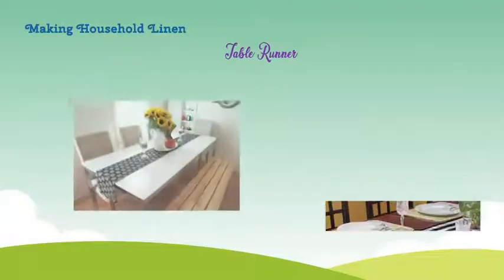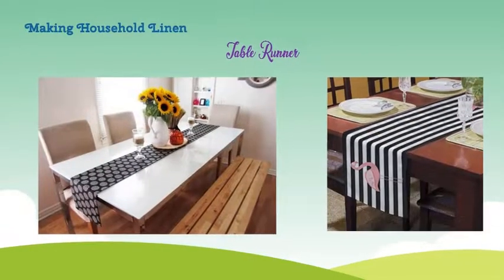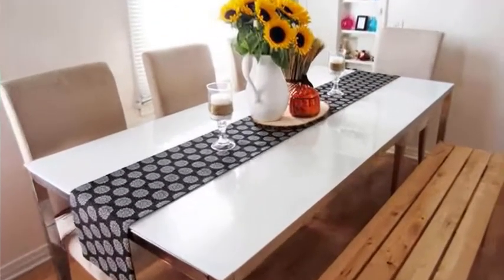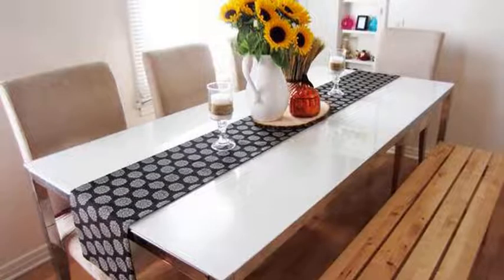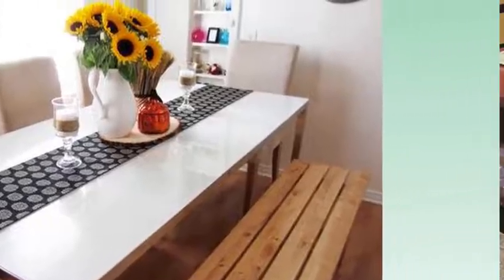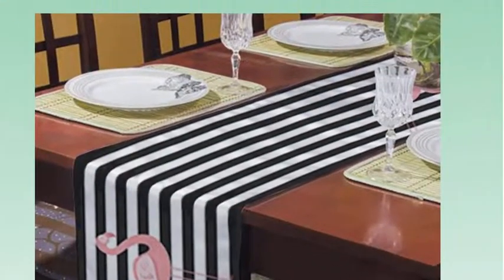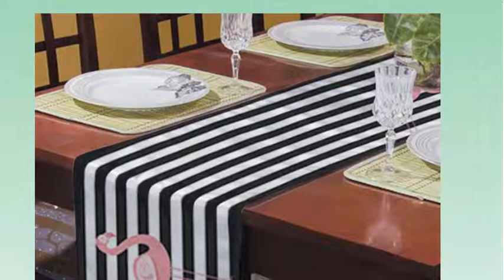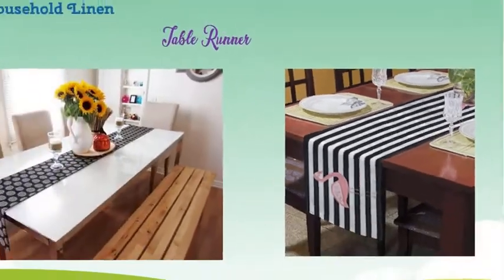Making household linen: the table runner is another kind of household linen. It is a narrow length of cloth placed on top of a tablecloth or on a bare table. Table runners are used in different ways. They can be laid down the center of the table or laid across the table for decoration and design.